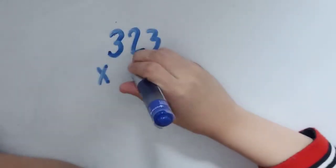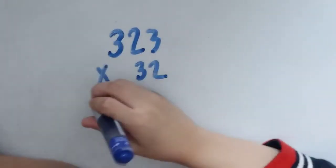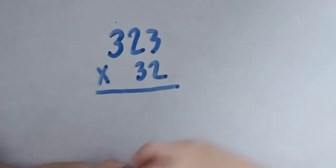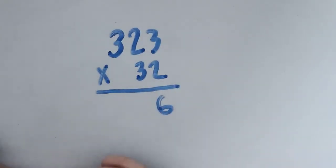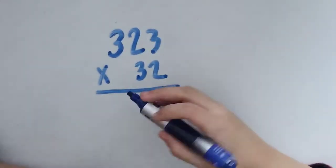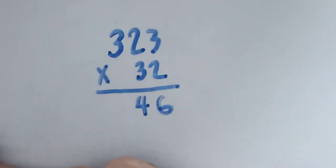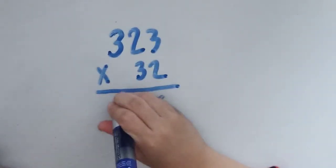323 × 32. 2 × 3 is 6, and 2 × 2 is 4, and 2 × 3 is 6 again.